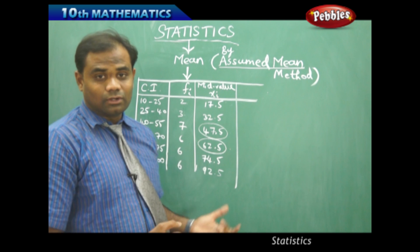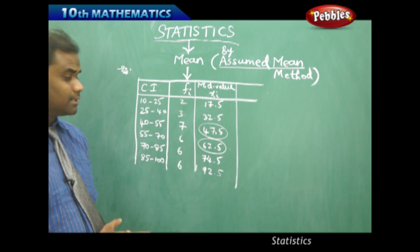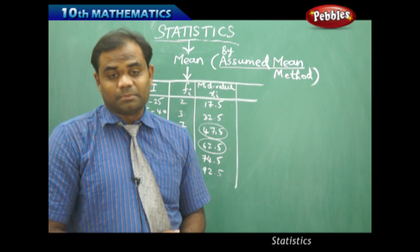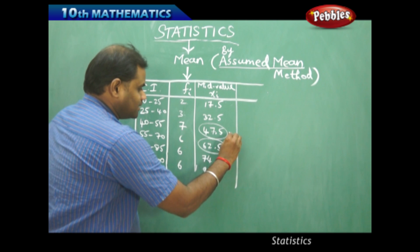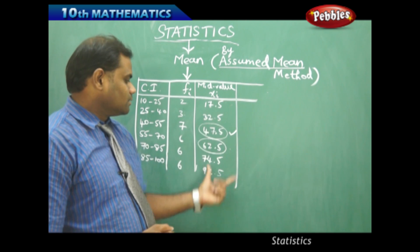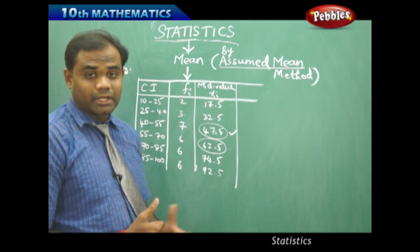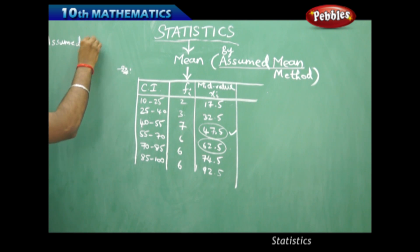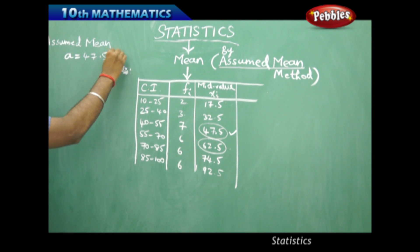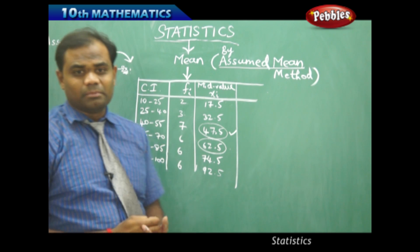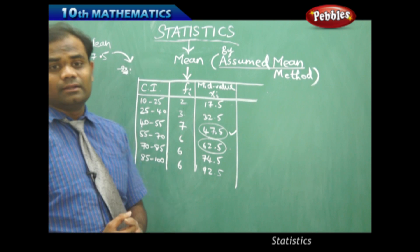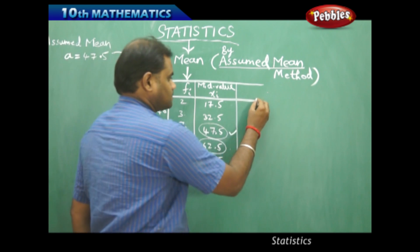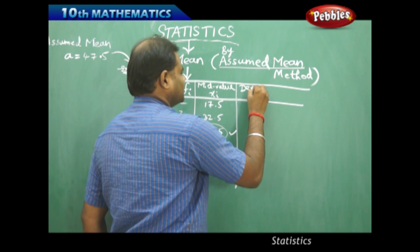There is nothing wrong if we take other values as the assumed mean, but generally the rule says we take the middle value as the assumed mean. So let me take the value 47.5, which lies in the middle of the xi values ranging from 17.5 to 92.5, as the assumed mean. The assumed mean is denoted by A, so A = 47.5 for this problem. Now, taking A = 47.5, let's calculate the next column — the deviation.